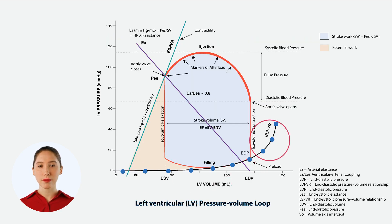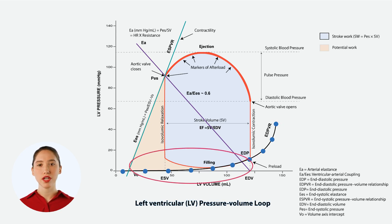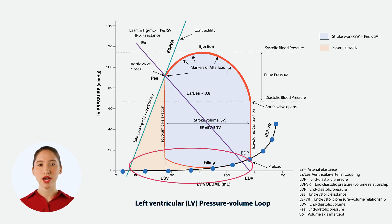A steeper portion of the curve indicates that even a small increase in blood volume causes a large increase in pressure, which can signal a stiff or non-compliant ventricle. On the other hand, a flatter portion of the curve means the ventricle can accommodate larger volumes of blood with less increase in pressure, suggesting a more flexible or compliant ventricle.